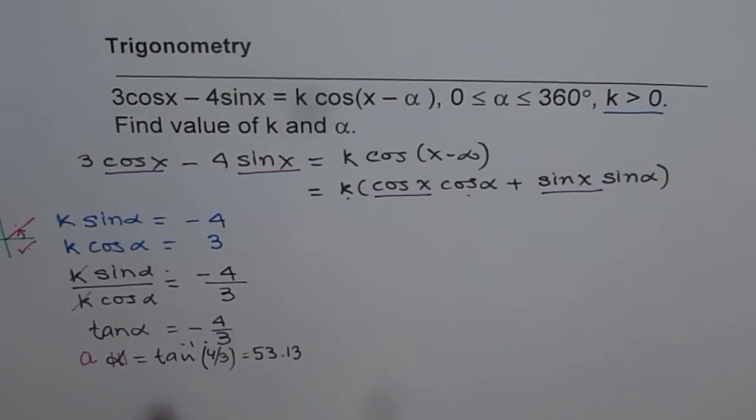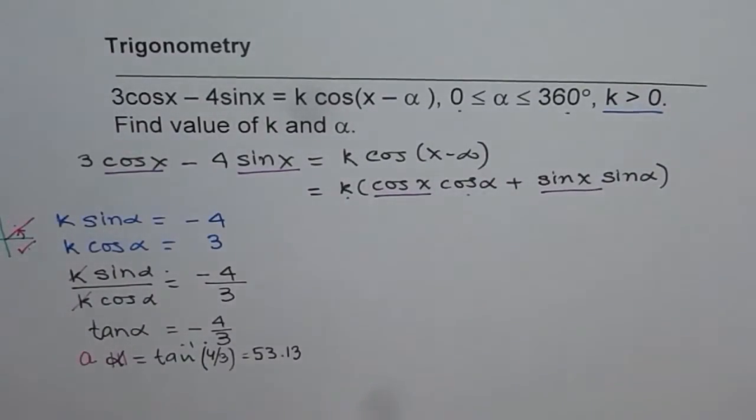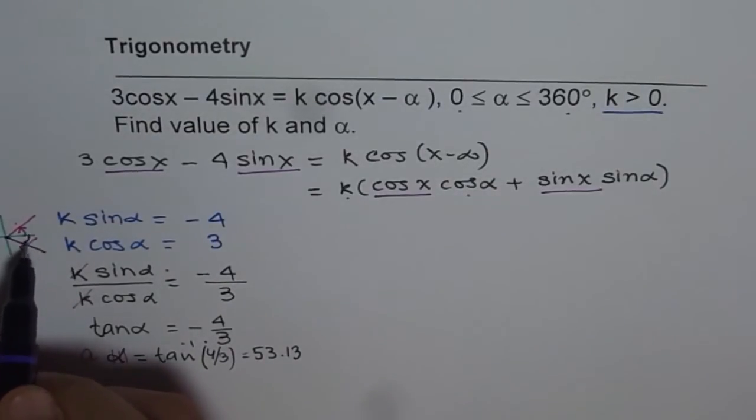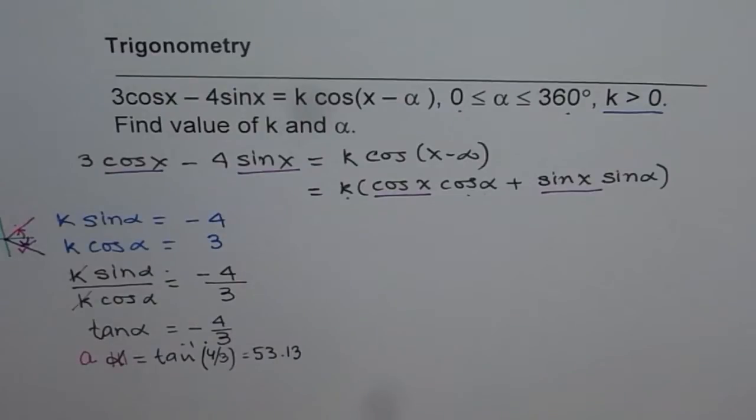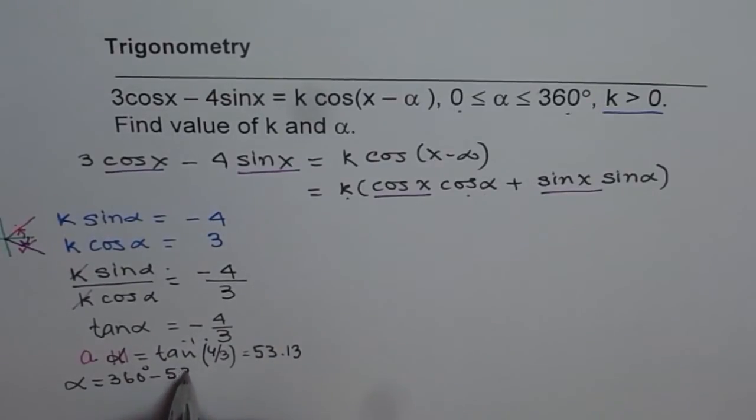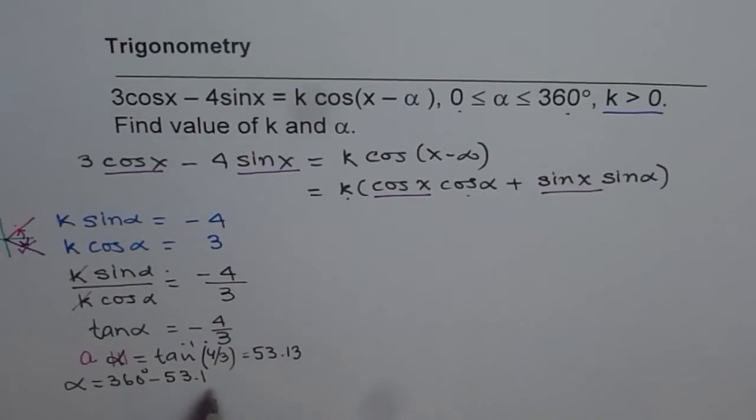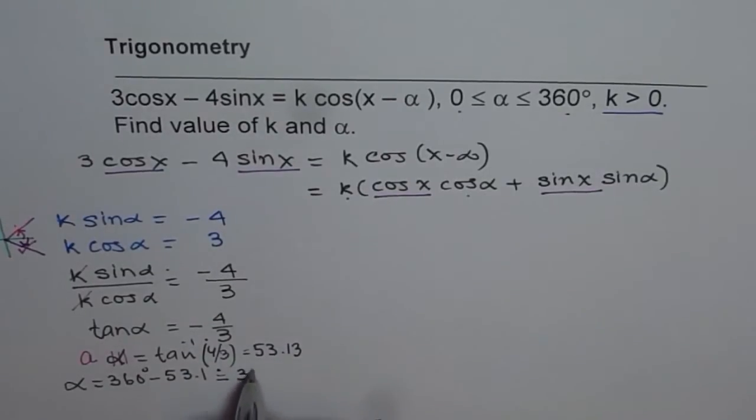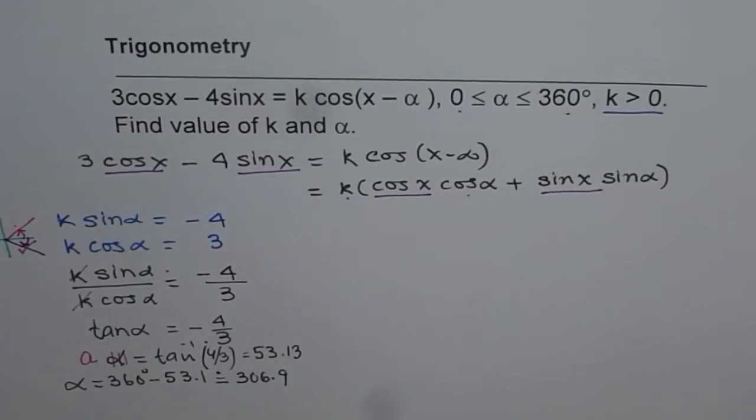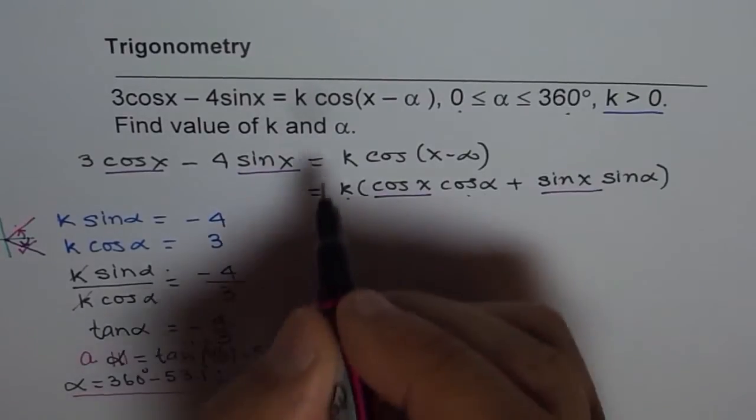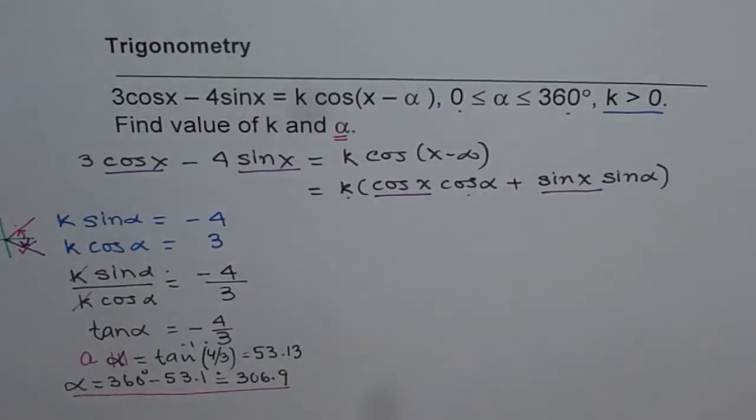So now we know that acute angle is 53.1. But since we know we are interested in quadrant 4, so angle alpha, which is actually between 0 to 360, has only one possible value, and that is in quadrant 4. Which we are going to get by writing 360 minus 53.13. So from here we get, that angle alpha is equal to 360 degrees minus 53.1, and we get that angle approximately as equals to 306.9. So that is our first answer, alpha is equal to 306.9.